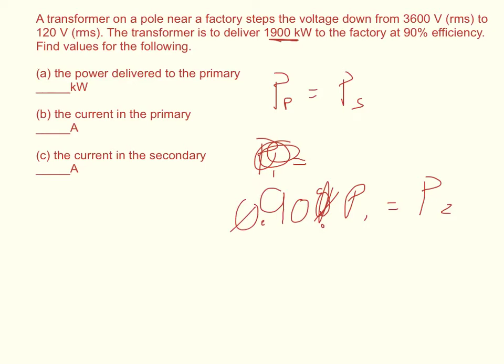So how much is the power in the primary? So power in the primary is equal to P2 divided by 0.9. And so P2, it tells us, is 1,900. You divide that by 0.9. The power in the primary is 2111.111 kilowatts.